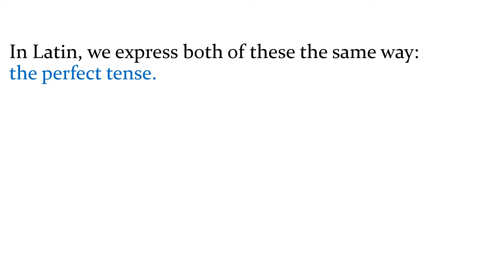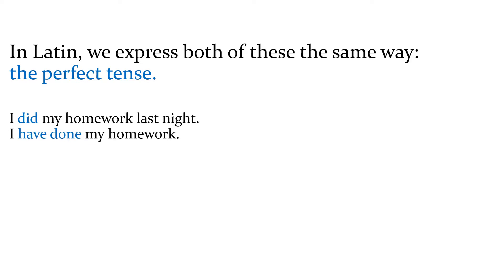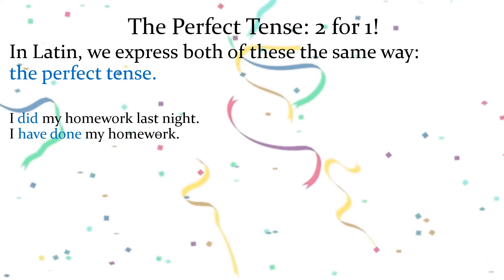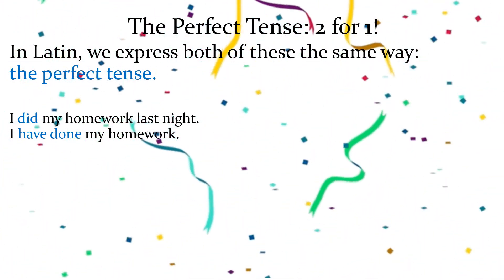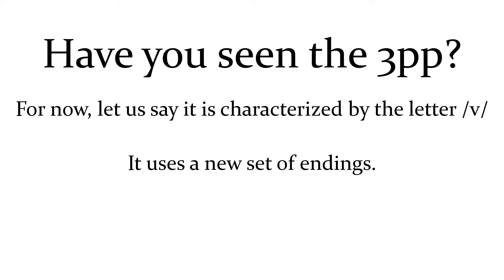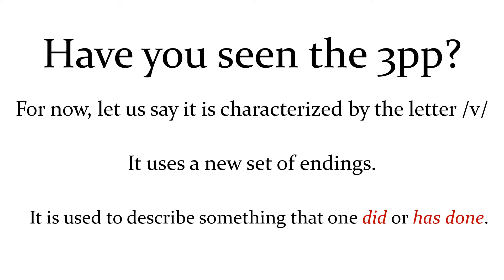In Latin we can express both of those tenses — the simple past and the present perfect — with one tense. We use the perfect tense. 'I did my homework last night' and 'I have done my homework' — in English these are two separate tenses; in Latin they are just one. So it's kind of like getting a two-for-one sale — we're finally catching a break. To start building the perfect tense, you need to use the third principal part, which is pretty easy to put together and is almost always provided for you. It is characterized by the letter V — though not always — and it has a unique new set of endings used to describe something that one did or has done.